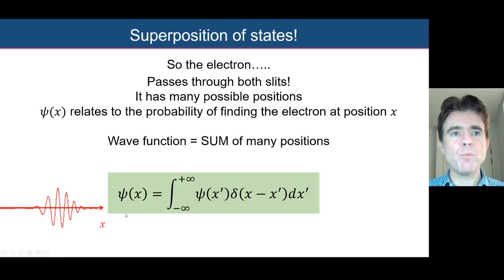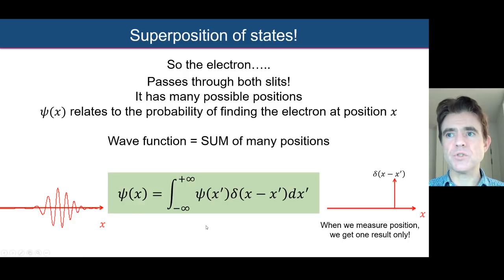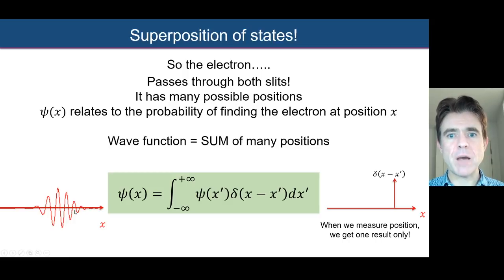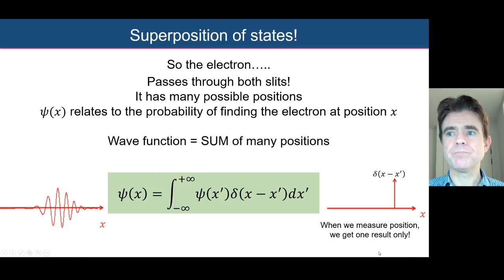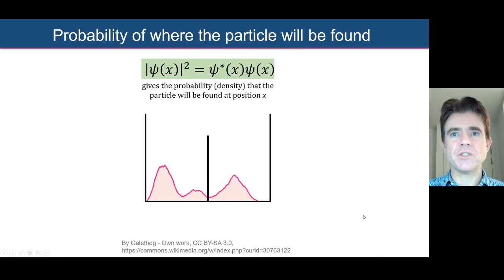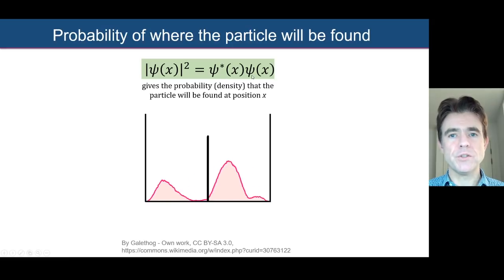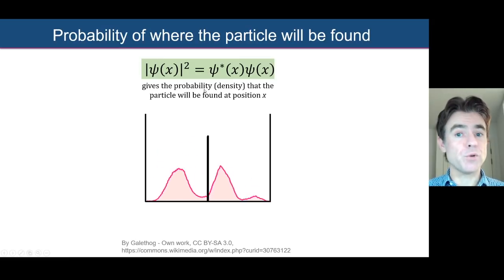When we measure where that particle is exactly, we get what's called wave function collapse, where we end up with just one single delta function only. The one that we pick up is related to this being treated as a probability amplitude. Basically, this is what the wave function looks like — when we measure it, it collapses to just one fixed position, one single delta function at a particular location x-prime.